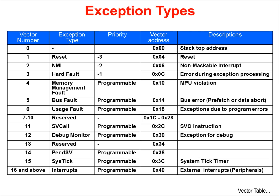Exception types on the Cortex-M include reset, the non-maskable interrupt, hard fault, and 7 others shown in the table. Note the priority levels for reset, NMI, and hard faults — only those cannot be changed. A hard fault covers all classes of fault when the corresponding fault handler cannot be activated because it is disabled or masked. A memory management fault is caused by a memory protection unit violation or invalid accesses such as an instruction fetch from a non-executable region. Bus faults are an error response from the bus system caused by an instruction pre-fetch abort or data access error. Usage faults are caused by invalid instructions or invalid state transition attempts. SVCALL is a system service call via the SVC instruction. Note that the priority is programmable for most of these faults.